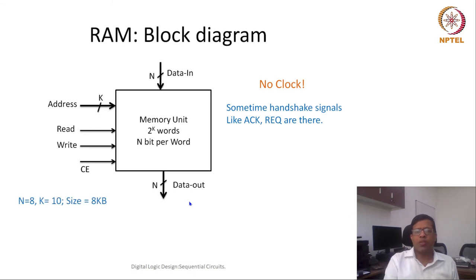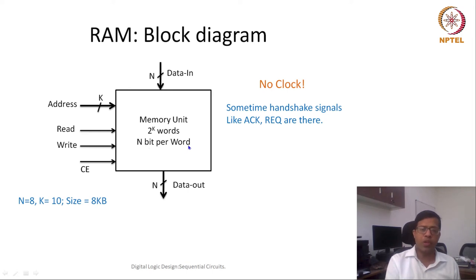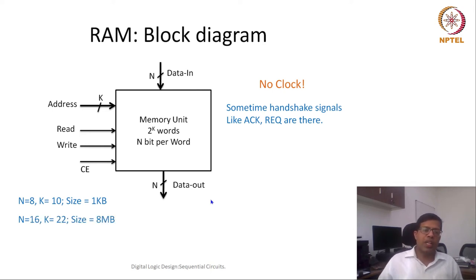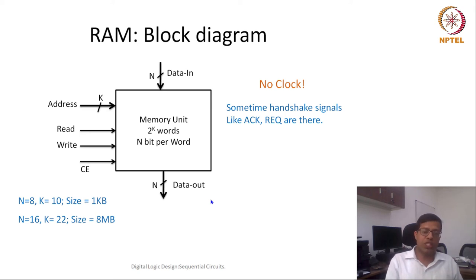Now let's talk about sizes. If n equals 8 and k equals 10, then k equals 10 means 2 to the power 10 words, and n equals 8 means 1 byte per word, giving a total size of 1 kilobyte. If n equals 16 and k equals 22, then total number of words is 2 to the power 22, which is 4 mega words. Each word is 16 bits, equal to 2 bytes, so the total size would be 8 megabytes.